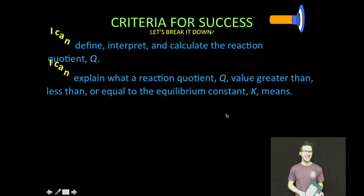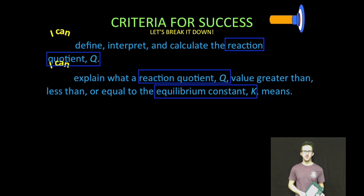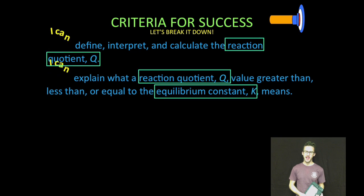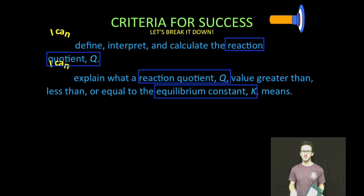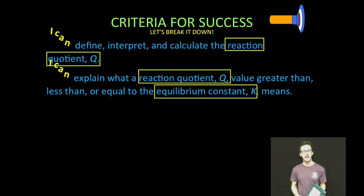As always, breaking it down. First thing we're going to do, define, interpret, and calculate the reaction quotient represented by the letter Q, capital Q. And then number two, we're going to explain what a reaction quotient represented by that capital letter Q greater than, less than, or equal to the equilibrium constant represented by that capital letter K means.